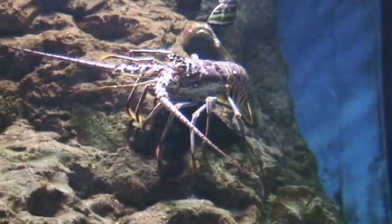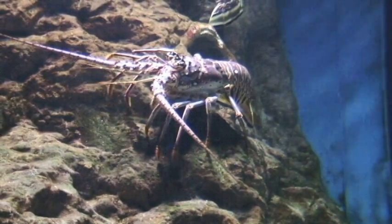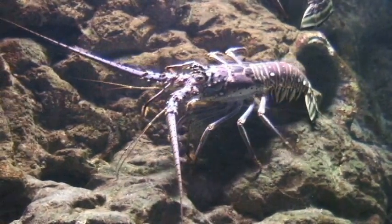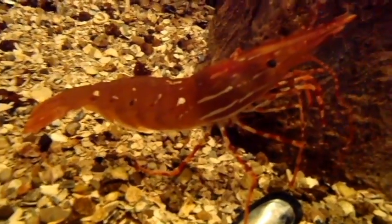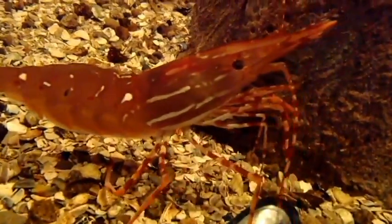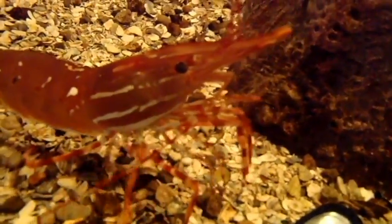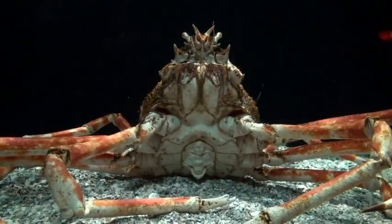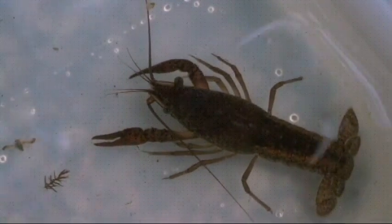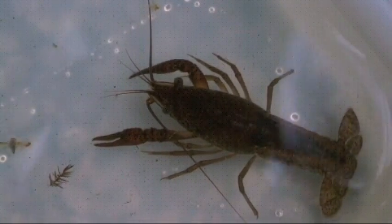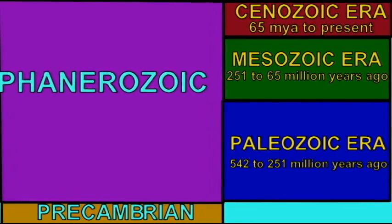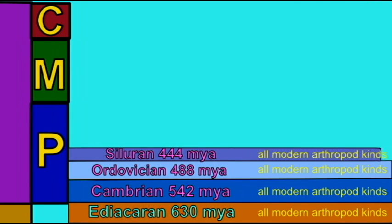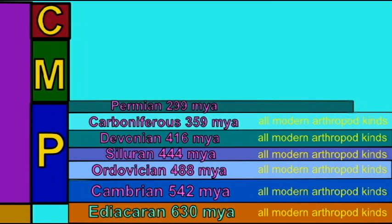If the creationists are correct, then every kind of modern arthropod has always existed. Arthropods are among the most common animals alive today—found in terrestrial ecosystems with insects, spiders, and scorpions, and in aquatic ecosystems with lobsters, crayfish, and crabs. If the creationist model holds that all modern kinds of arthropod have always existed, then finding modern kinds of arthropod in the oldest rocks—Precambrian, Cambrian, etc.—would provide strong support for the creation model.